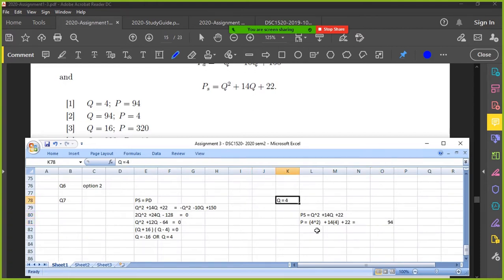So, 4 and 94. Q is 4. P is 94. Option 1. Do you see that? Yep. Okay, 4 and 94. That's the right one.